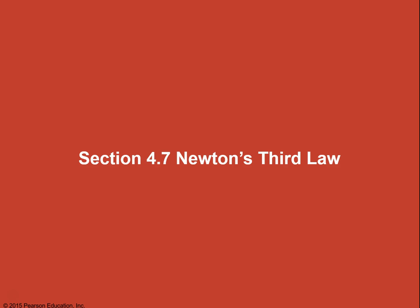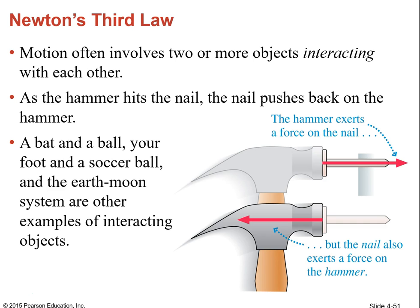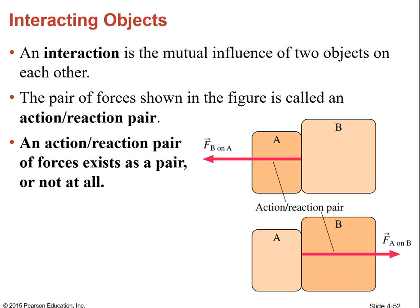Newton's third law: motion often involves two or more objects interacting with each other — hitting something, touching the floor with the floor pushing back. The hammer hits the nail and the nail pushes back. The earth exerts a force on the moon; the moon exerts a force on the earth. When you push on something, it pushes back — that's always the case whenever you make contact with anything.